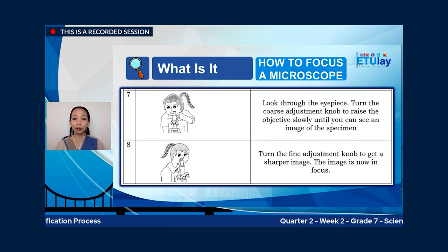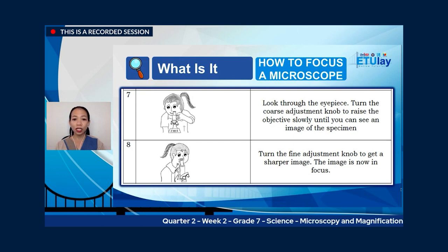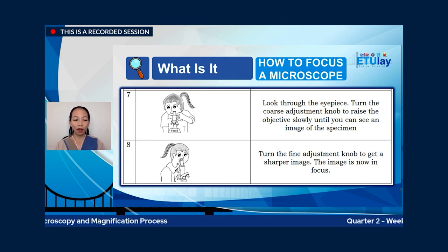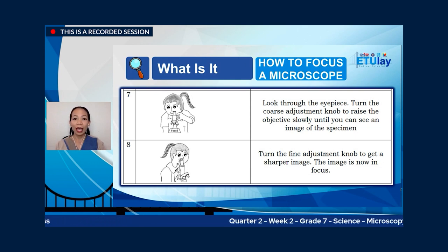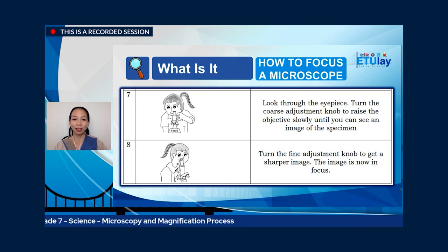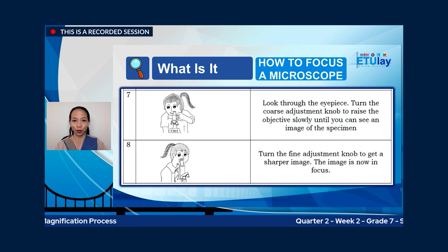Seven, look through the eyepiece and turn the coarse adjustment knob to raise the objective slowly until you can see an image of the specimen. Eight, turn the fine adjustment knob to get a sharper image — the image is now in focus. Focusing a slide on a microscope takes patience; resist the temptation to rush.